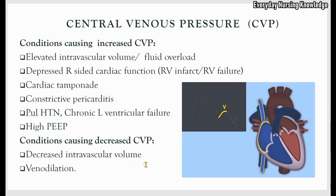Now let's look at conditions that can increase or decrease CVP. CVP represents preload and volume. When the patient is fluid overloaded or has elevated intravascular volume, it can cause increased CVP. Any condition that affects the pumping ability of the heart can lead to increased CVP — for example, depressed right-sided cardiac function. If there is a right ventricular infarct or right ventricular failure, there is always backup pressure, and CVP increases. Cardiac tamponade — fluid filling the pericardium around the heart — also affects pumping ability, causing CVP to increase.